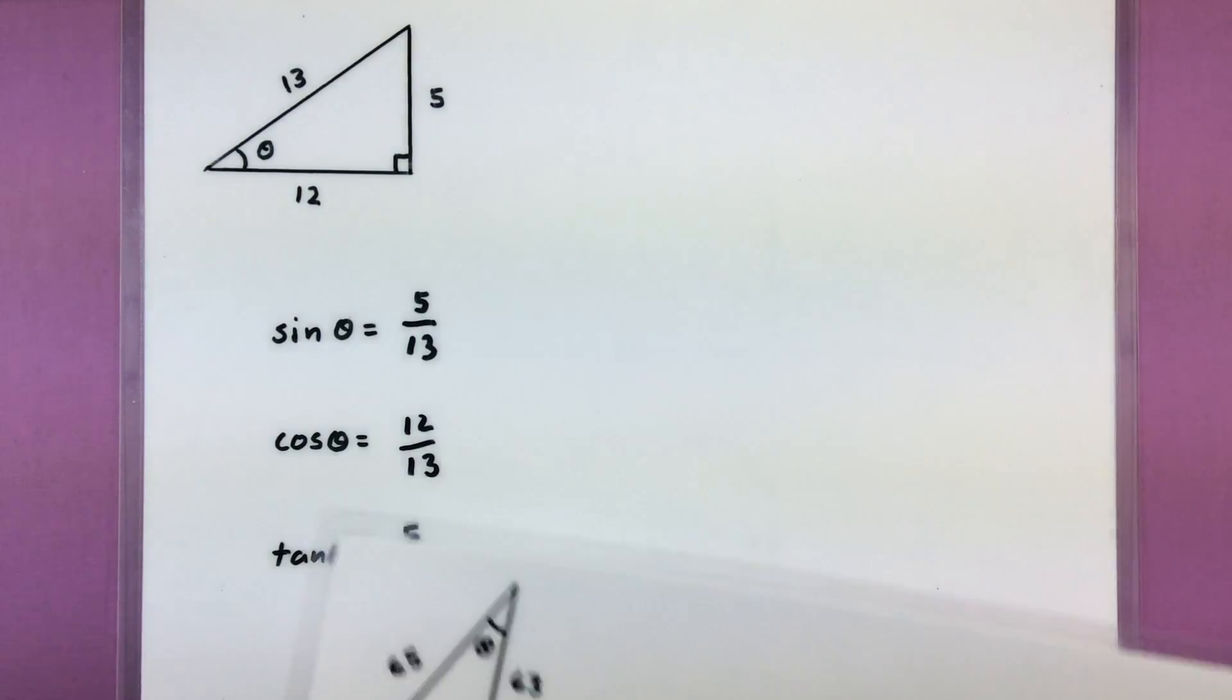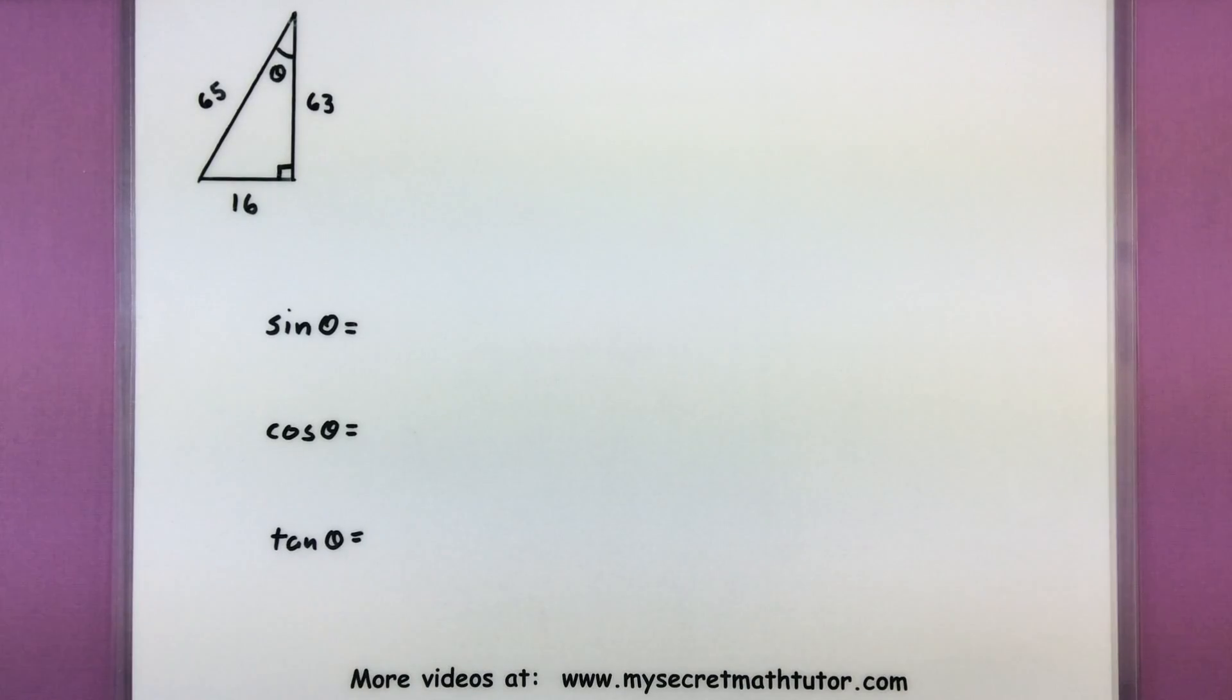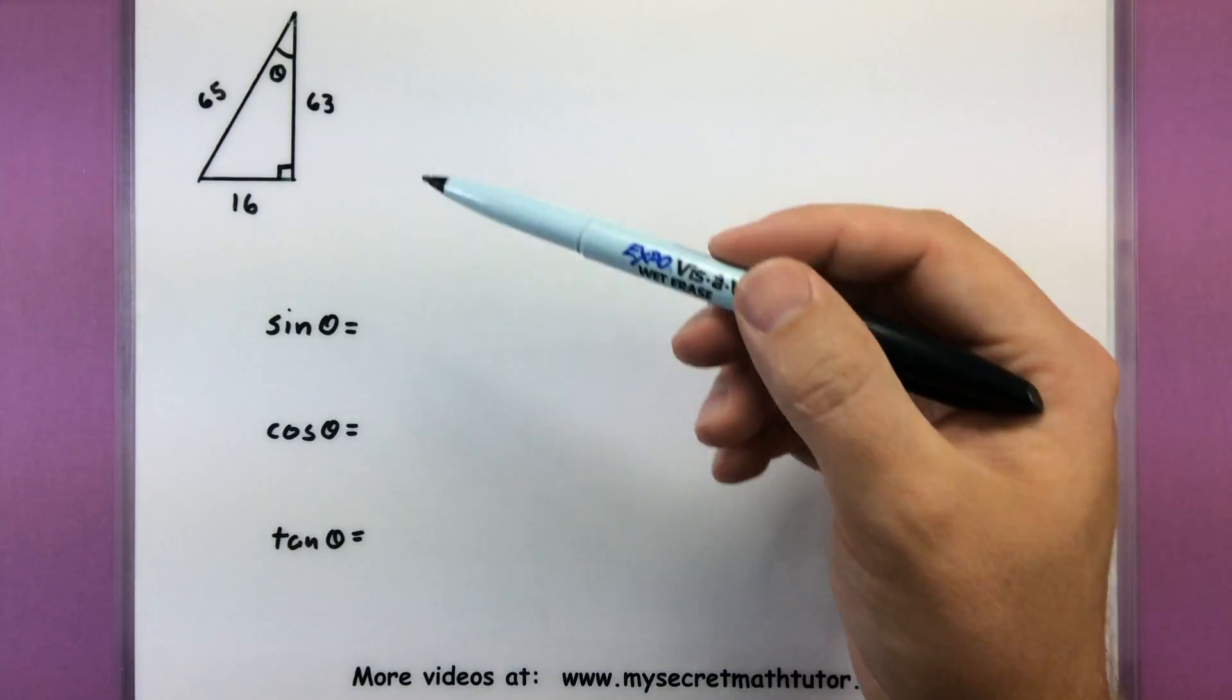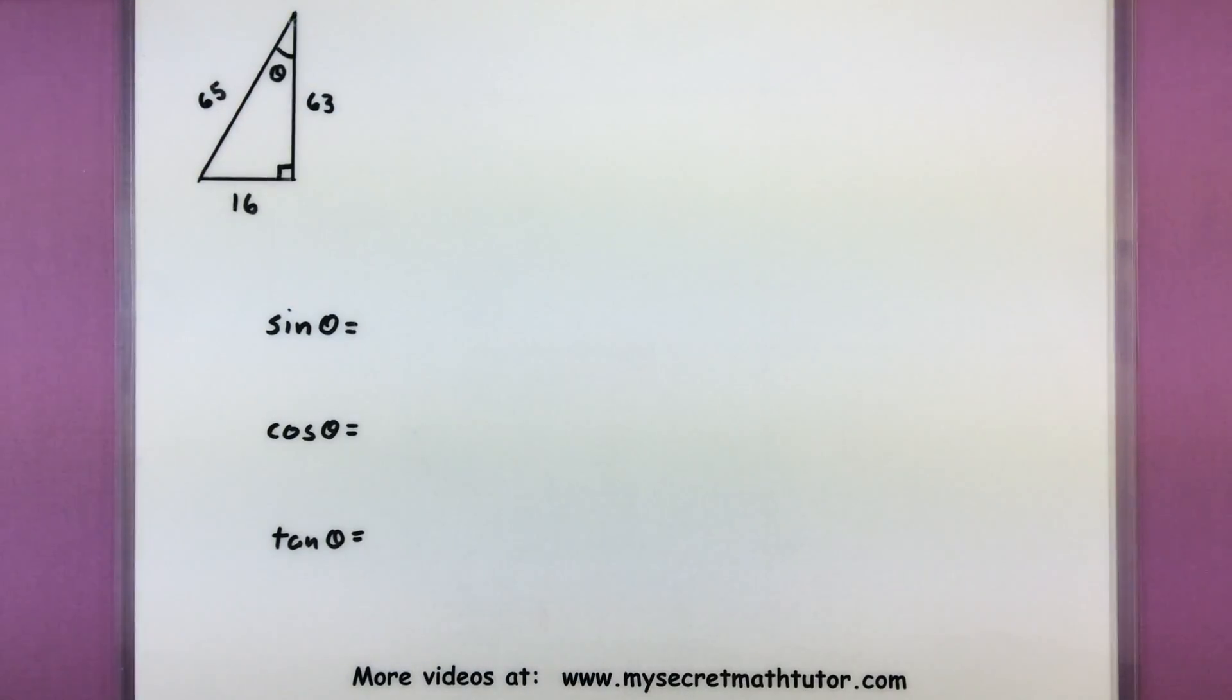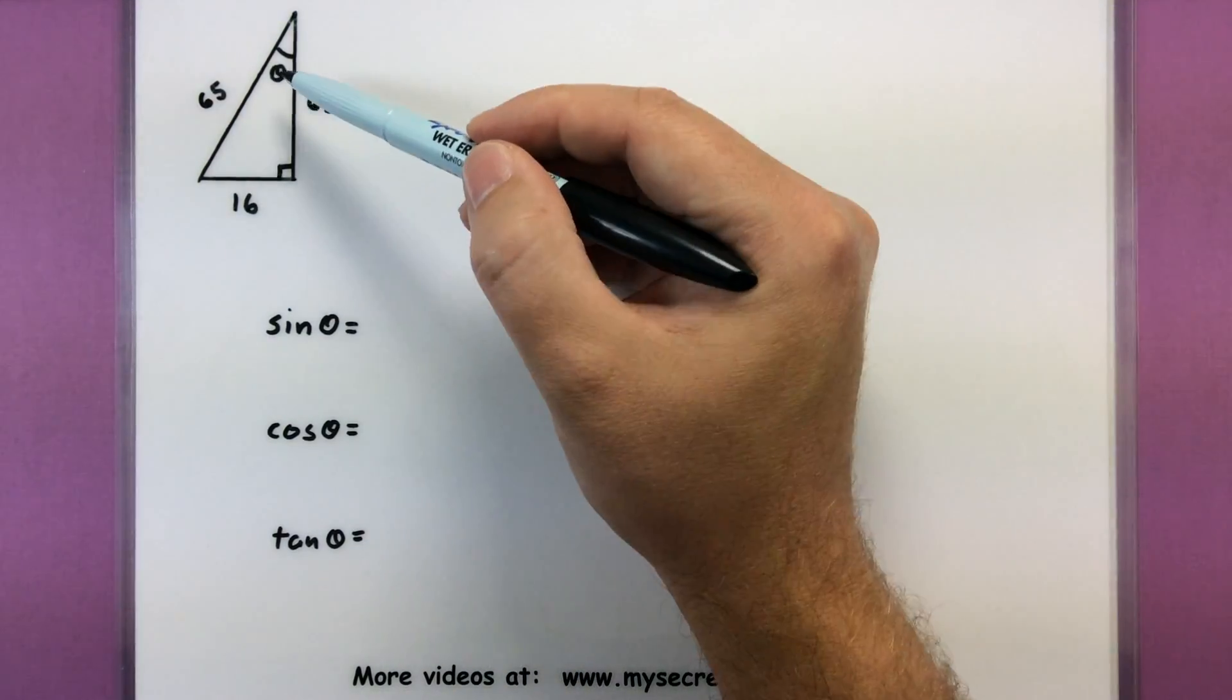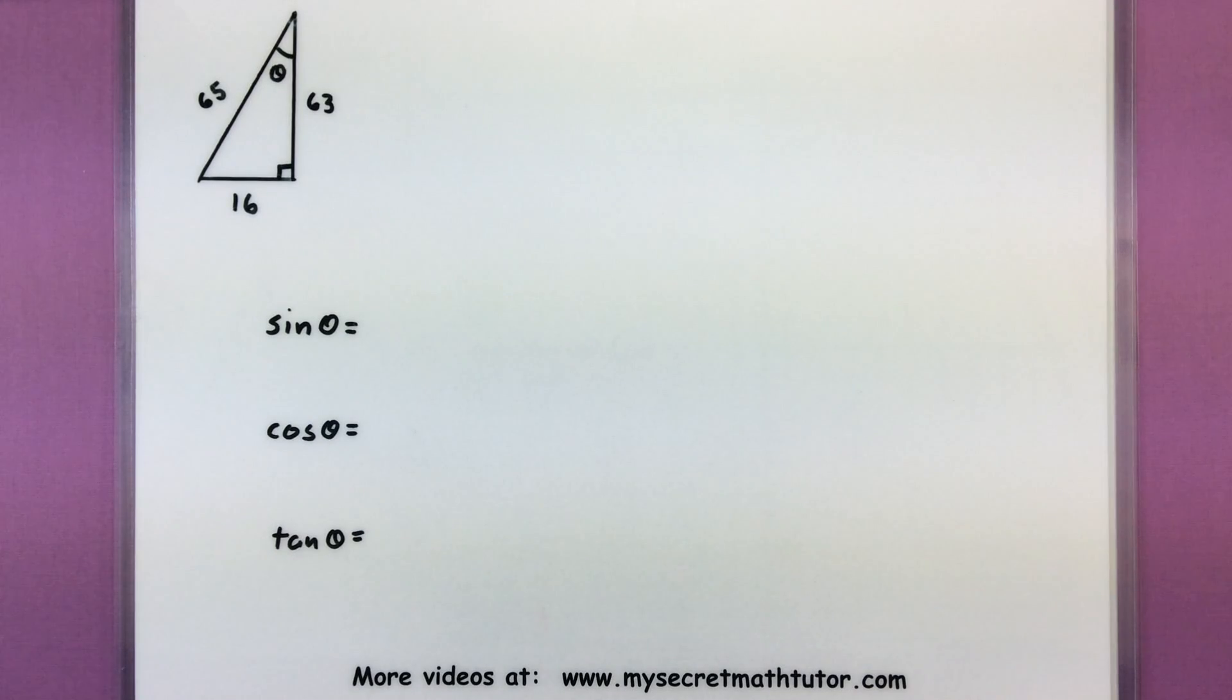Now one thing you want to be aware of is that these trigonometric functions really do look at a specific angle. So even if I have a triangle like this, I can still find the trigonometric functions, but notice how I'm looking for this angle, theta, in the upper corner now.